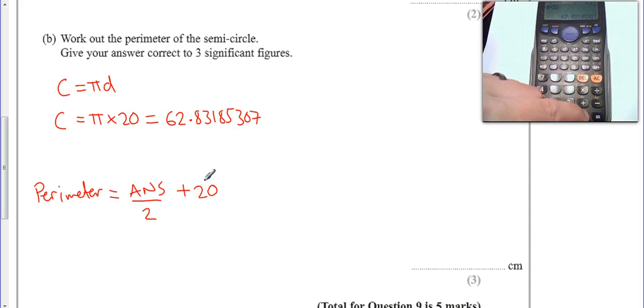So then easily on my calculator I can just go answer divided by 2, plus my 20, which gives me 51.51, I'm going to write the whole thing out. You can see it on my calculator and your display, 41592654.